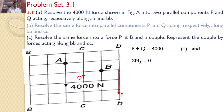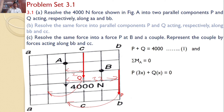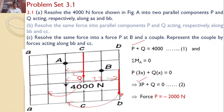Taking moments about point A: Q will introduce a moment in one direction and P will also introduce a moment in the same direction. Assuming each unit distance is X, this distance becomes 3X. Taking moments about A gives P into 3X plus Q into X equals 0, which simplifies to 3P plus Q equals 0. With two equations — P plus Q equals 4000 and 3P plus Q equals 0 — solving gives P equals minus 2000 newtons and Q equals 6000 newtons.